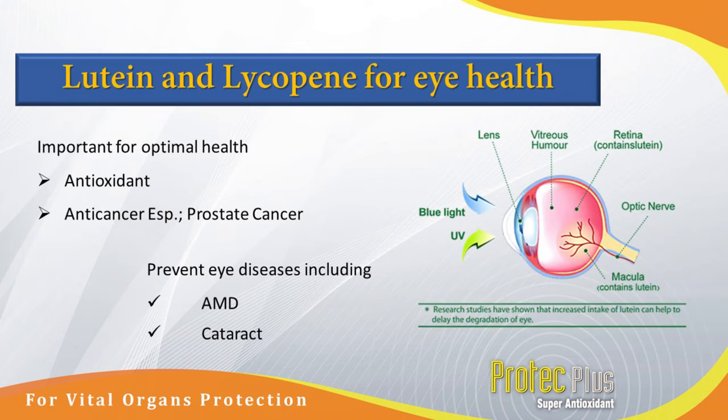Lutein is a lycopene. Lutein is an antioxidant and cancer. It is an aging-related disease, AMD, and cathartic.